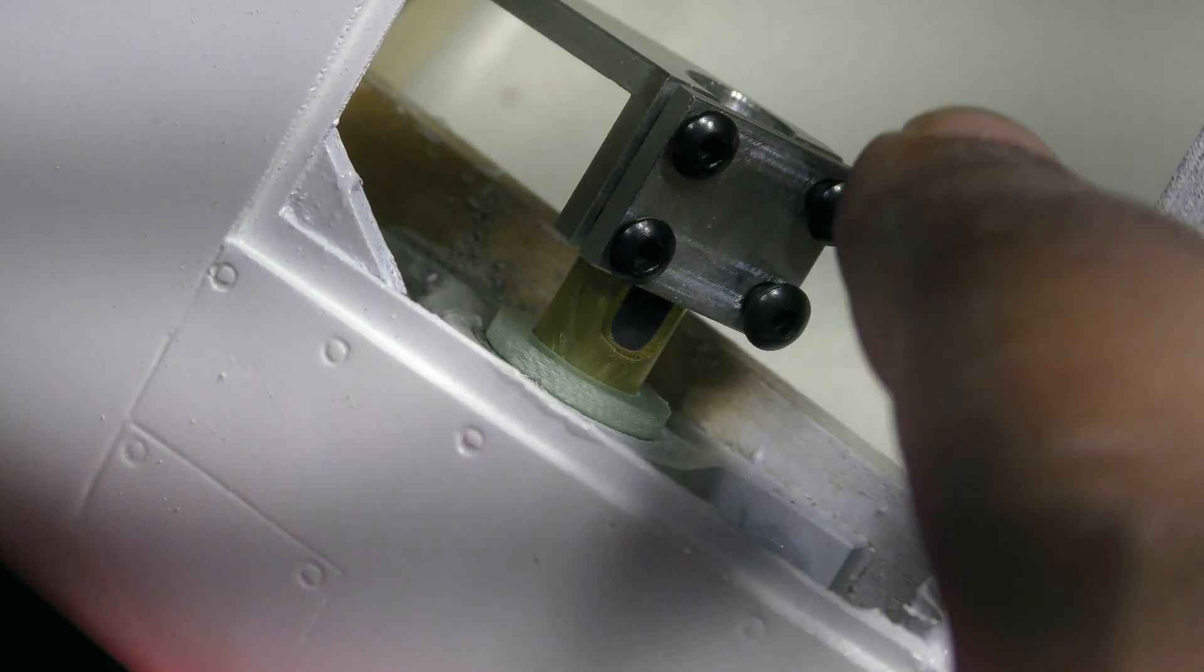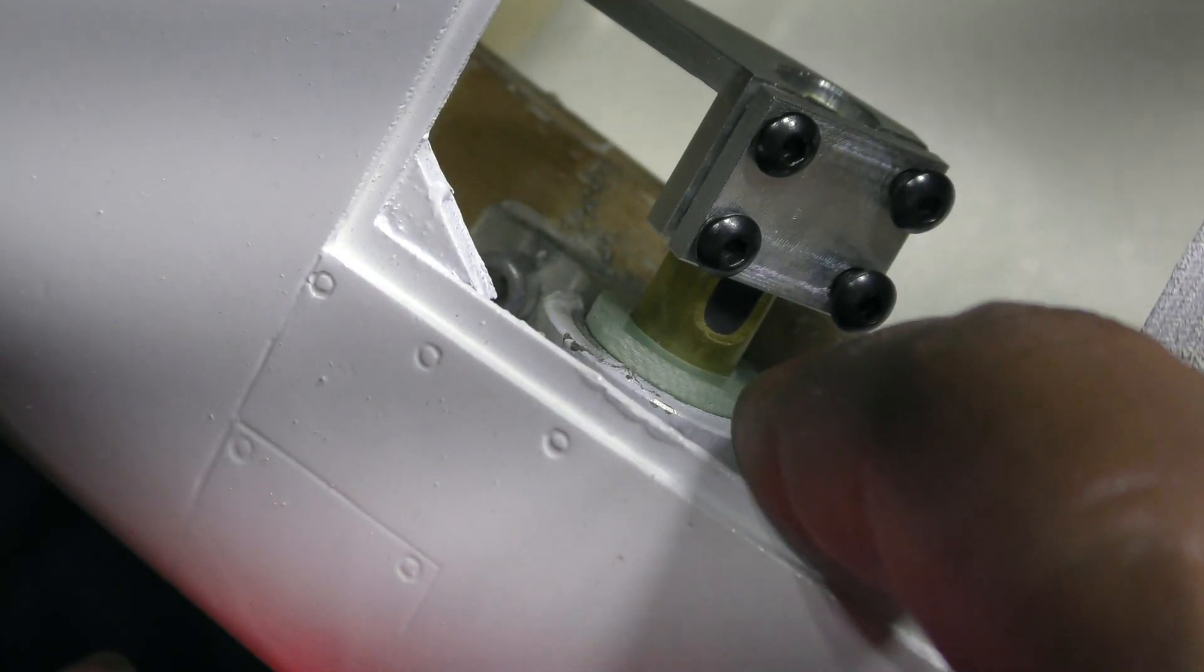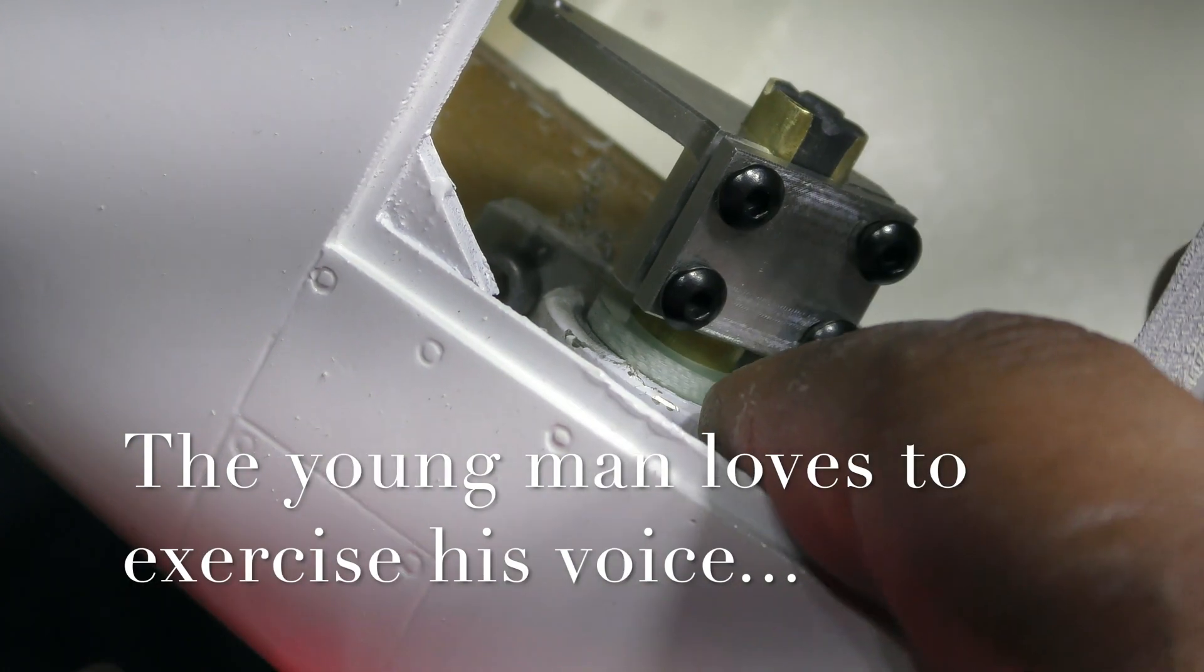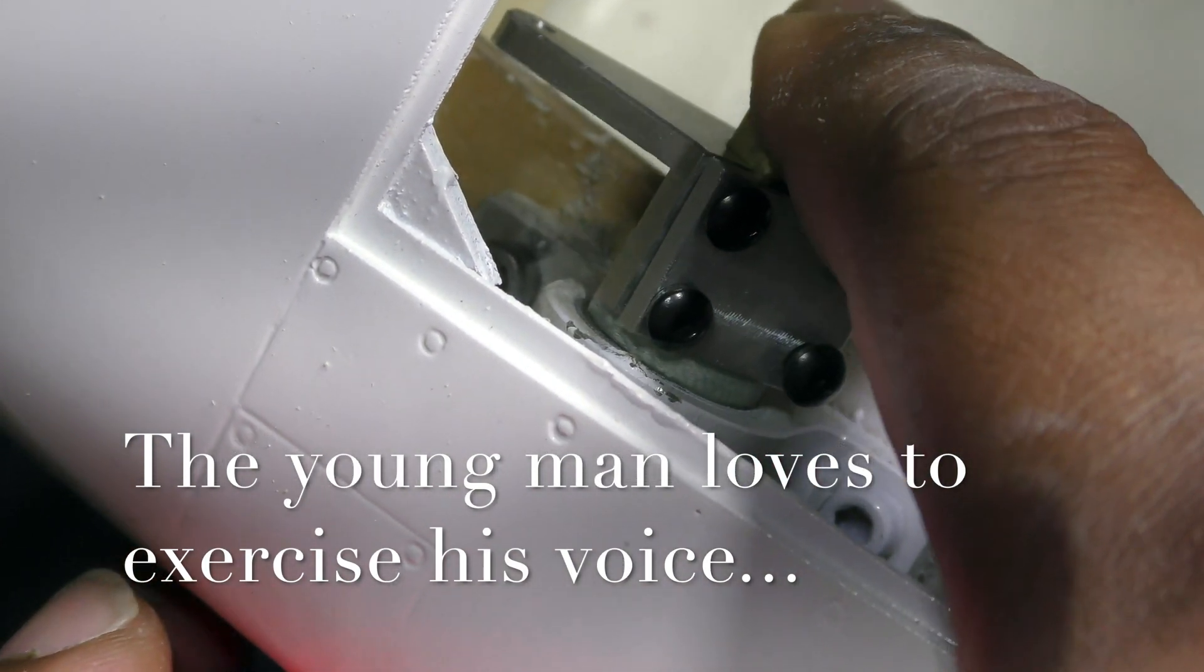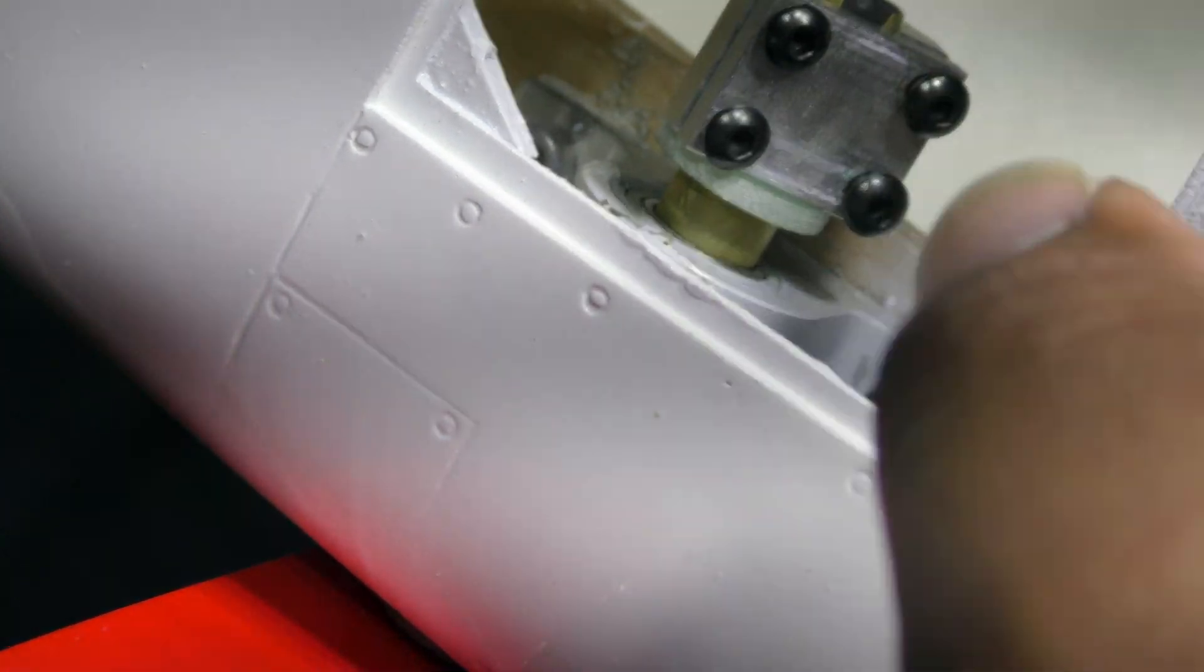It's important because if that flat spot doesn't get to the end, when you close this, you leave a gap and that means the control surface can move, and I don't want that.